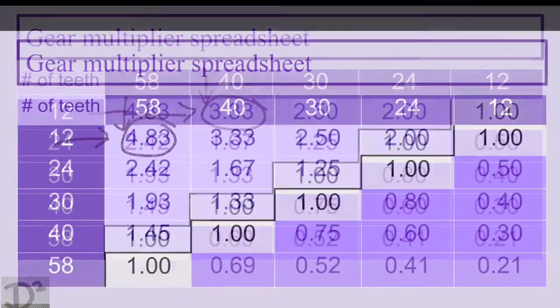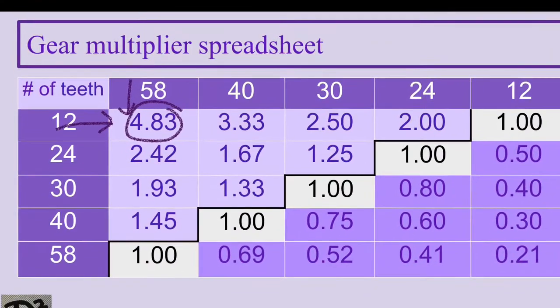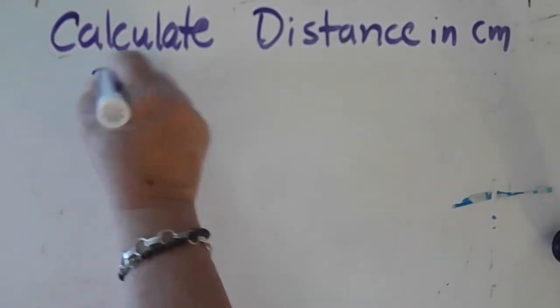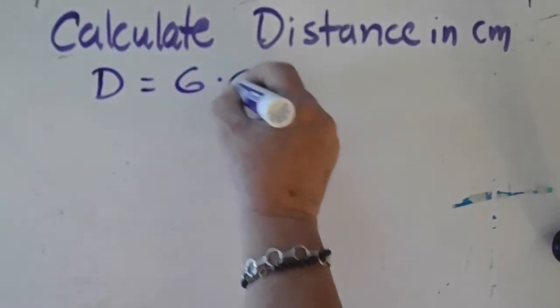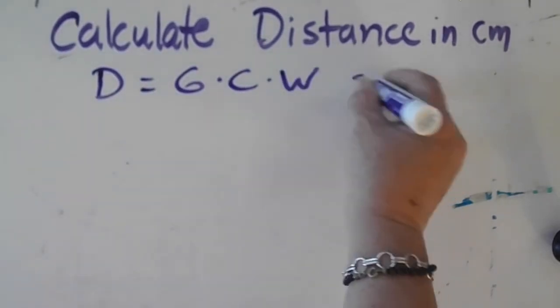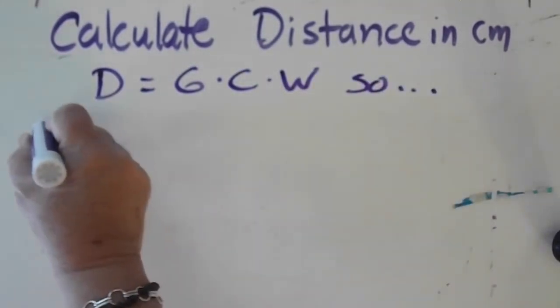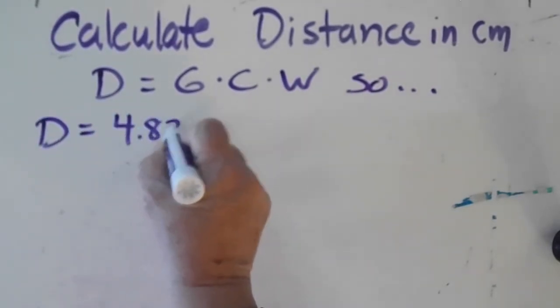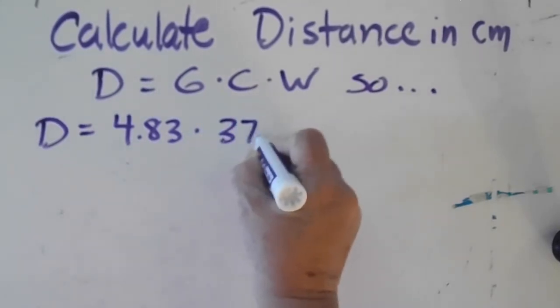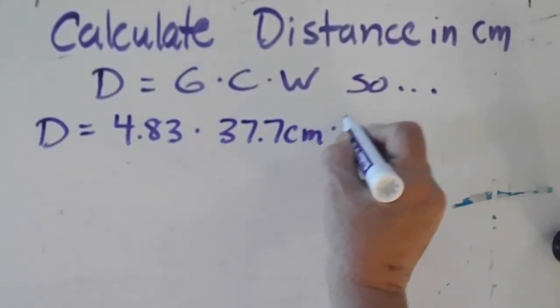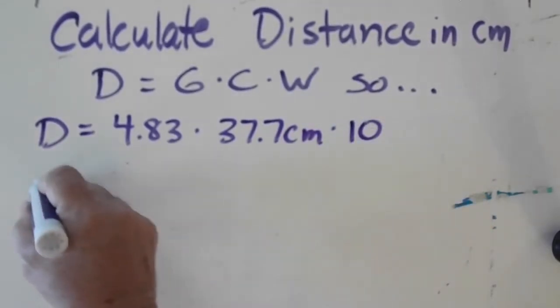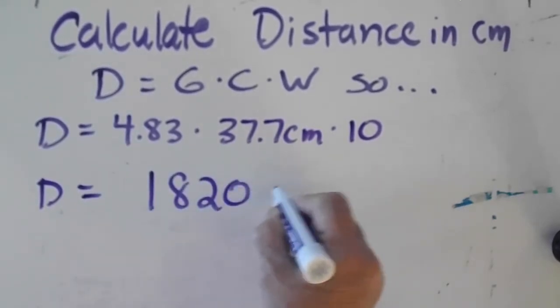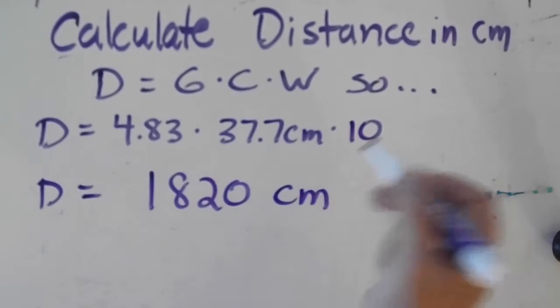Only one of these pairings produces a gear multiplier that is enough for the CD wheel to go 1600 centimeters. Since the 58 to 12 pairing produces a gear multiplier of 4.83, it's a little above the needed 4.2, so it should produce a distance greater than 1600 centimeters. Let's see what the math reveals: D = G × C × W, so 4.83 × 37.7 cm × 10 string wraps equals approximately 1820 centimeters. None of the other pairings produces a gear multiplier that gets close enough to this predetermined distance, so this would be an acceptable compromise.